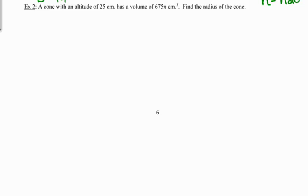This says they're giving us a cone that has an altitude of 25 centimeters and a volume of 675 pi cubic centimeters. Find the radius of the cone. So the first thing that I'm going to do because they don't give us a picture is I'm going to draw one.